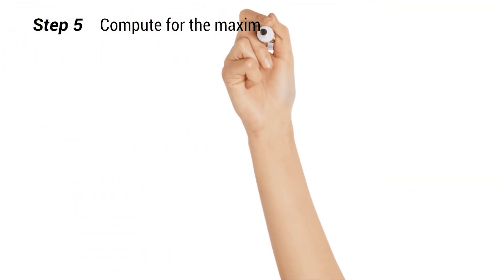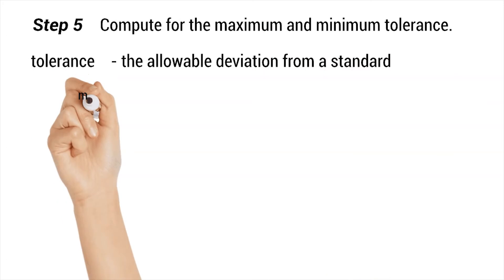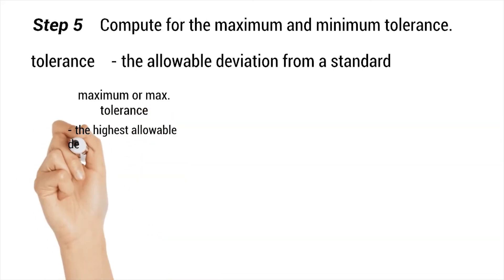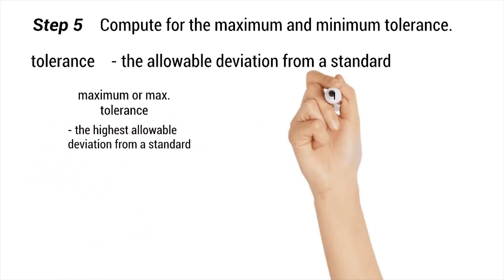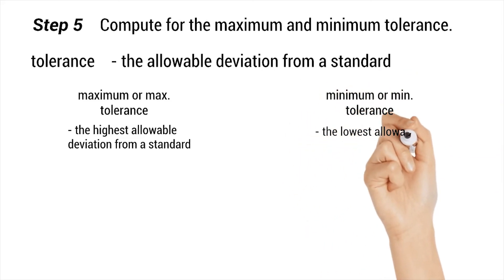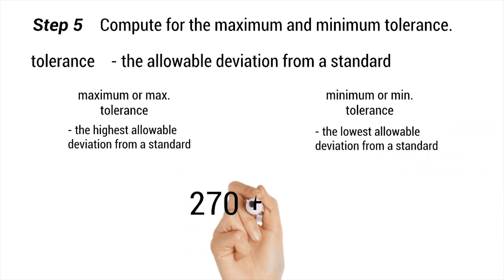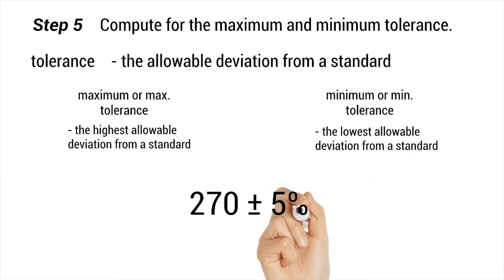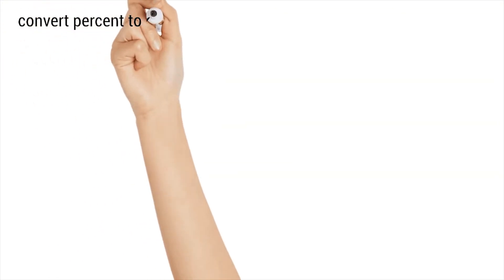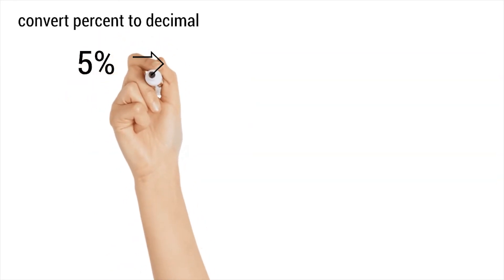Step five: compute for the maximum and minimum tolerance. Tolerance is the allowable deviation from a standard. Maximum tolerance is the highest allowable deviation from a standard. Minimum tolerance is the lowest allowable deviation from a standard. For the four-band resistor, since the resistance is 270 plus or minus 5% ohms, we will get 5% of 270. We will convert the percent to decimal by changing the percent sign to a decimal point.